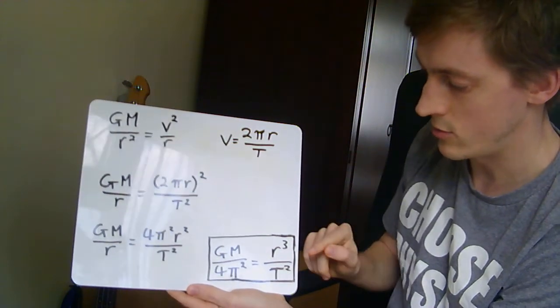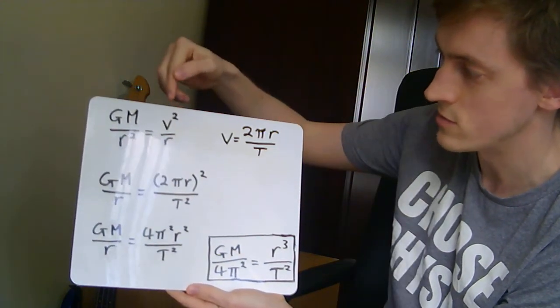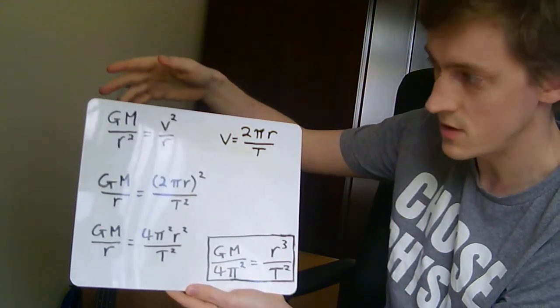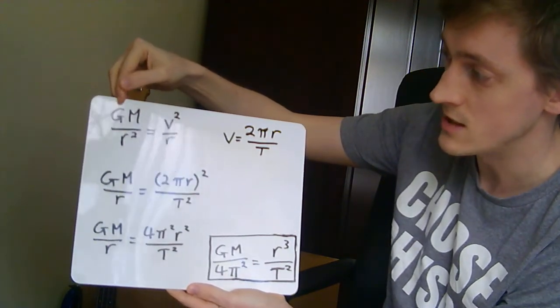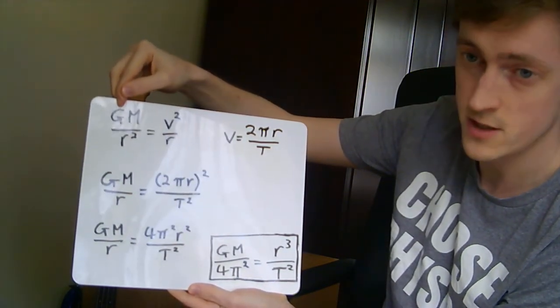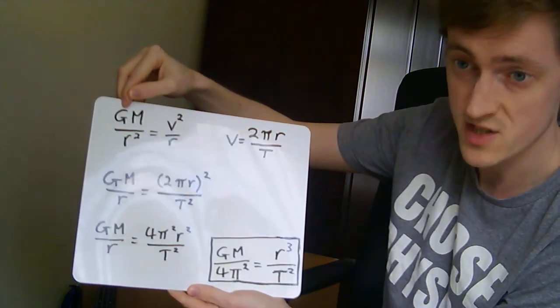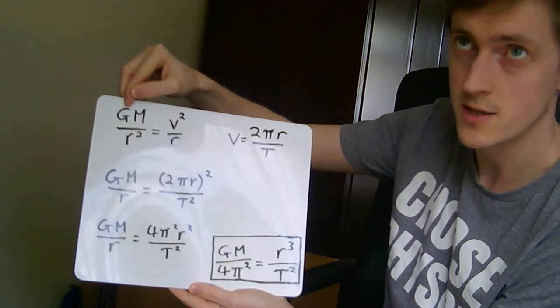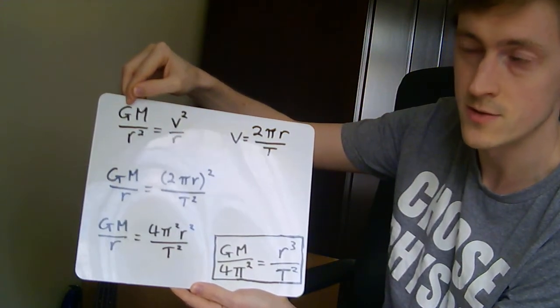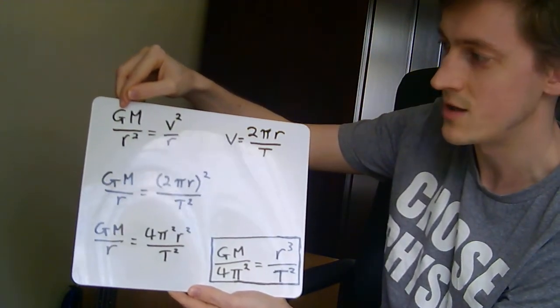He then did a bit of rearranging and came up with this. What did he do? Well, first of all, let's make sure that we know what these terms are. Capital G is the constant of gravitation, Newton's universal constant of gravitation. It's about 6.67 times 10 to the power of minus 11 newton square metres per square kilogram.